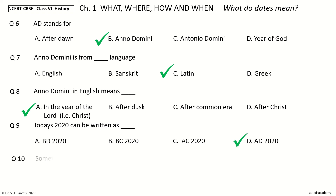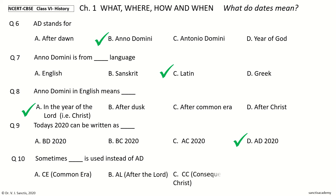Next question. Sometimes dash is used instead of AD. Your options: CE (Common Era), AL (After the Lord), CC (Consequent to Christ), AC (After Christ). And the answer is Common Era — CE.